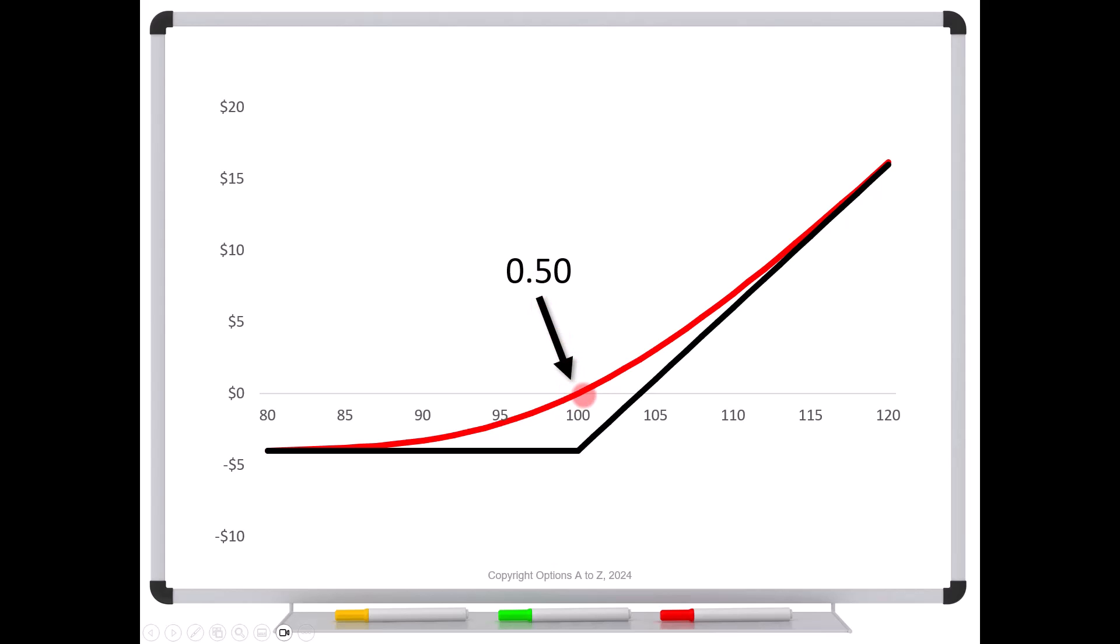But if the stock rises a little bit, maybe up here to 101 or 102, notice you're starting to get to a steeper part of the curve. And your broker's platform might tell you that now that call has a delta of 0.55. It's picked up some deltas. As the stock price rises further, maybe up here to 107, your platform might show that the delta has increased to 0.70.